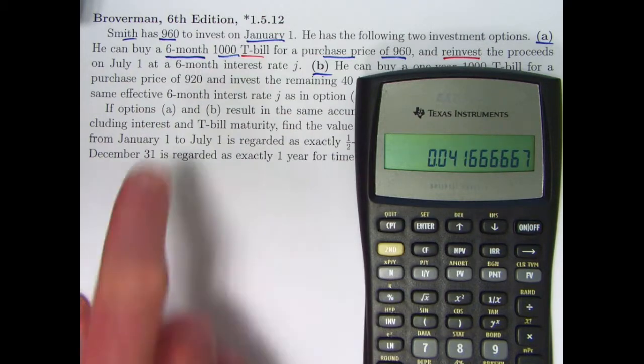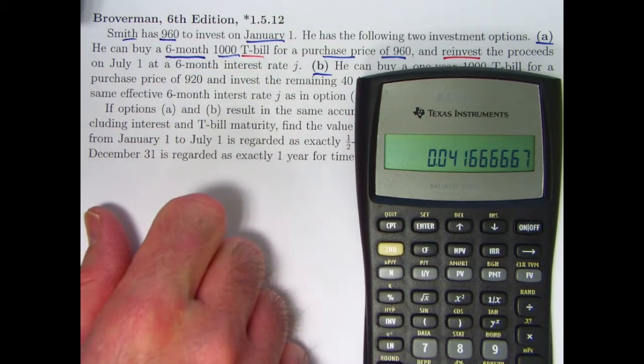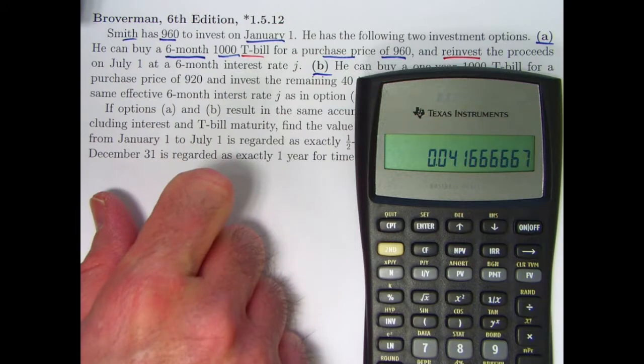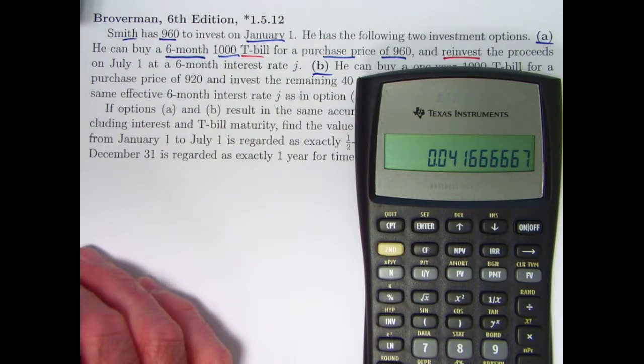More simply in this kind of situation, actually the interest is often quoted as a rate of discount. The interest earned, 40, as a ratio or percentage of the final amount, the accumulated balance of a thousand, is just four percent, and that is often how T-bill rates are quoted as rates of discount D instead of I or J.